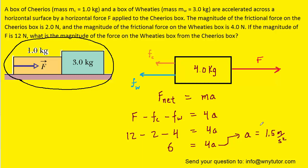Now, although that's the acceleration of the system, it would also be true that it is the acceleration of each box separately. So in other words, the acceleration of the Wheaties box will be 1.5 meters per second squared, and the acceleration of the Cheerios box also will be 1.5 meters per second squared.